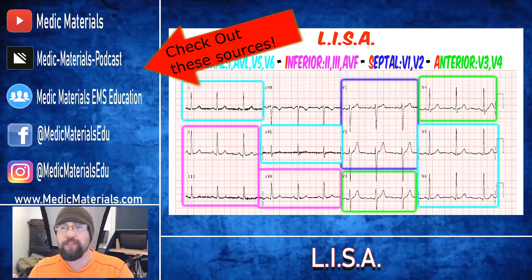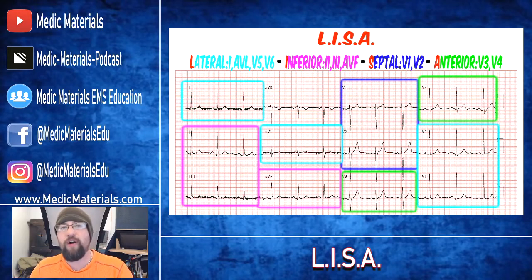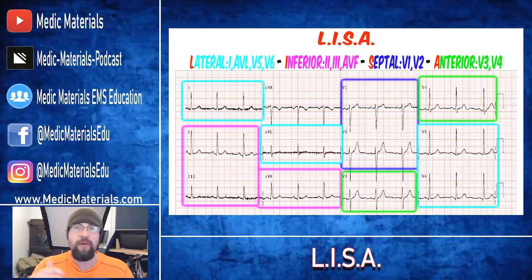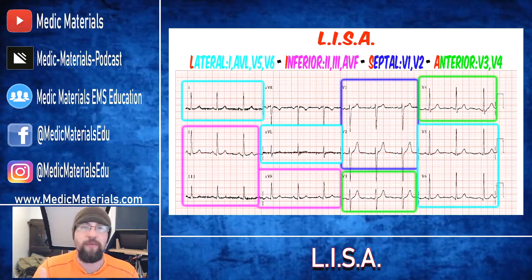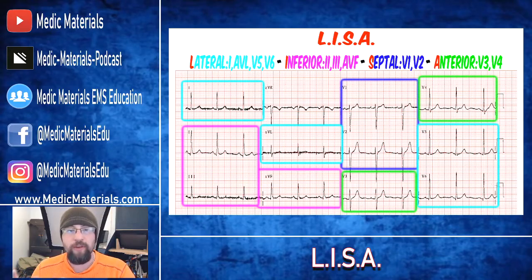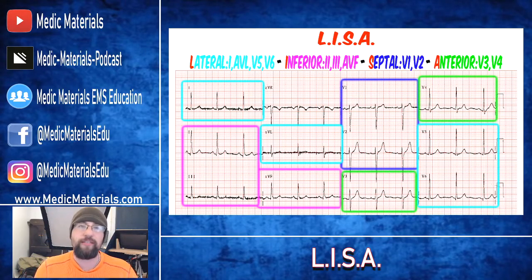Now, don't just think that if it's only in one spot it can't involve another. You can have maybe one lead — say you have an anterior septal — so you've got V1, V2 with maybe minor elevations or depressions flipping toward elevations, or maybe only V1 is elevated and not V2, but you have three or four millimeter elevations in V3 and V4. We can have combinations — there's inferior lateral, all sorts of different variants. LISA is a guideline to help you remember which leads are looking at which sections of the heart.